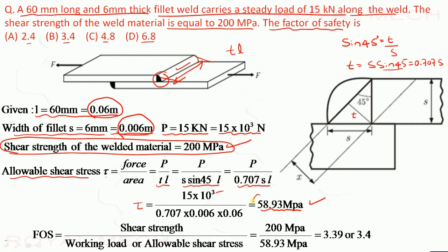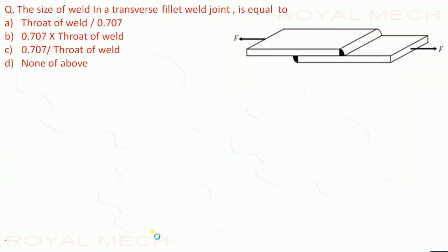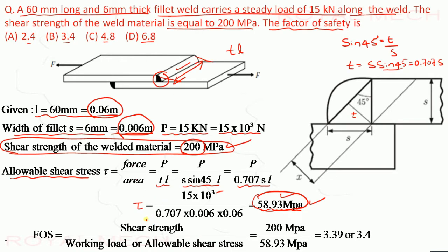This 58.93 MPa is the working shear stress. The shear strength of the weld material is 200 MPa. Since factor of safety equals shear strength divided by working shear stress, that is 200 divided by 58.93, which gives 3.39, approximately equal to 3.4. Therefore option B is correct.